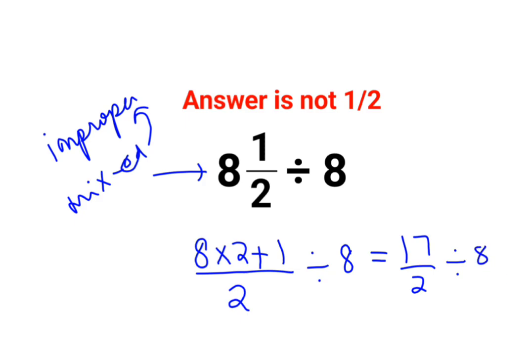Now whenever you have division you will follow the rule of KCF where K stands for keeping the first number as it is. So we will keep 17 upon 2 as it is. C stands for changing the division sign to multiplication. F stands for flipping or taking reciprocal of 8 which is 1 upon 8. So the answer for this question comes out to be 17 upon 16.